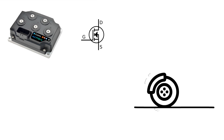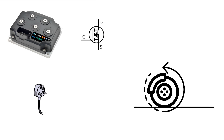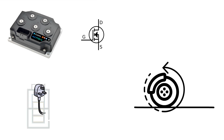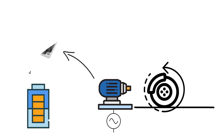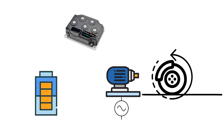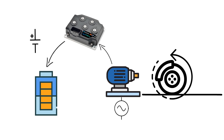You might have heard the term regenerative braking. In regenerative braking, the kinetic energy of the wheels is converted into electrical energy, and that energy is fed back to the battery to charge it up again. Here the motor acts as a generator producing AC power, which is converted by the motor controller into DC power and given to the battery pack. Hence the motor controller acts as a bi-directional converter — it converts DC power into AC to drive the motor, and converts AC power back into DC to charge the battery pack.